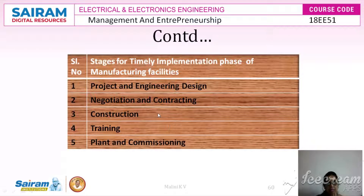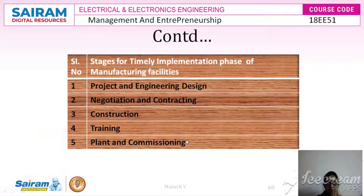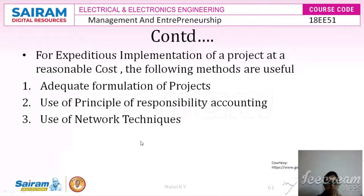The most important steps while implementing the time phase in the project implementation stage of a manufacturing facility are: first, project and engineering design; second, negotiation and contracting; third, construction; fourth, training; and fifth, plant commissioning. These are the five different stages which give timely implementation for manufacturing facilities.